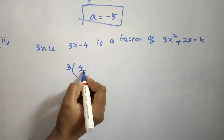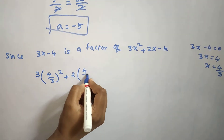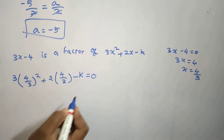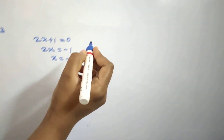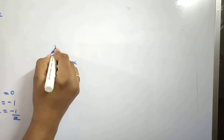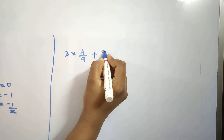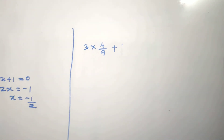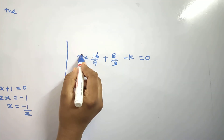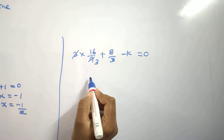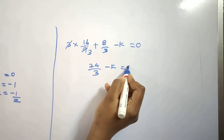So 3 into 4 by 3 the whole square, plus 2 into 4 by 3, minus k equals 0. Squaring 4 by 3 gives 16 by 9, so 3 into 16 by 9 gives 16 by 3. Then 2 into 4 by 3 gives 8 by 3. We cancel 3 and 9, so 16 plus 8 gives 24 by 3, minus k equals 0.